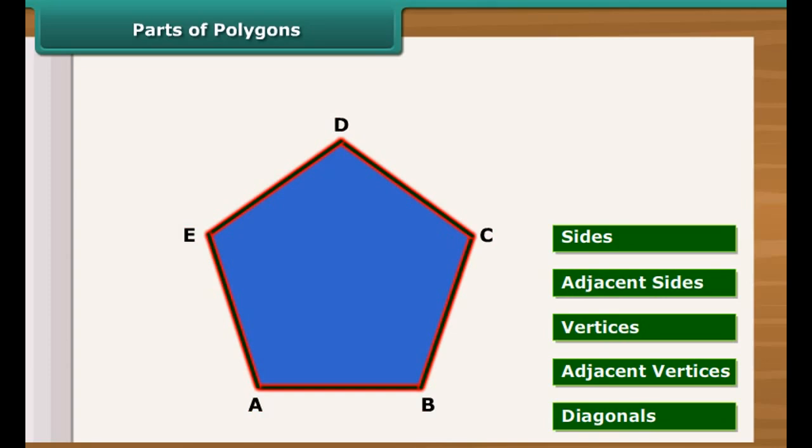These are the sides of polygon. Any two sides with common end points are called adjacent sides. For example, AB and BC, BC and CD, CD and DE, DE and EA are adjacent sides.